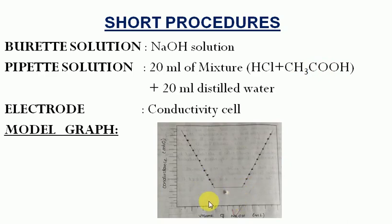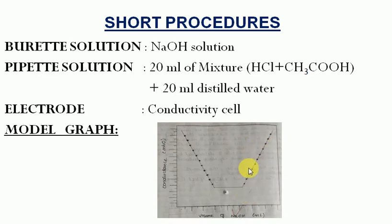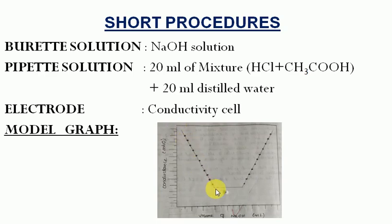In the first volume segment, we need to neutralize the HCl. While the conductance decreases, we can track excess sodium. We need to take readings from 1 to 30 readings and then plot the graph. This is the short procedure.